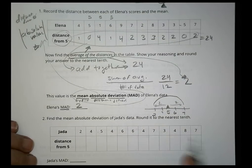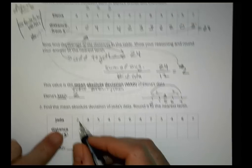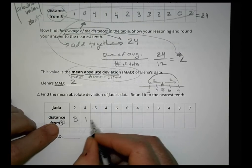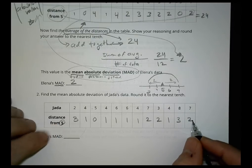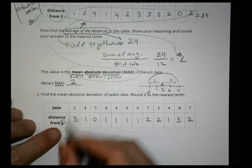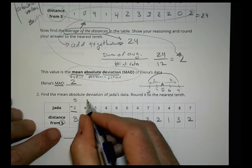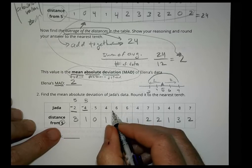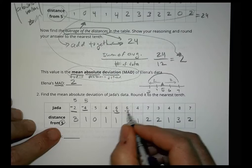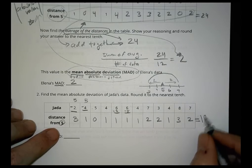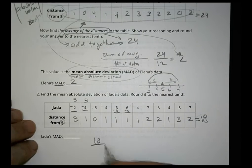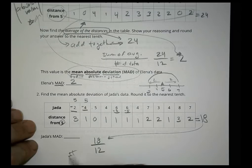Now let's find the mean absolute deviation for Jada. We find the distance from 5 for each of her values: 3, 1, 0, 1, 1, 1, 1, 2, 2, 1, 3, 2. For values less than 5 we do 5 minus the value; for values greater than 5, like 6, we do 6 minus 5. When you add those distances up, they equal 18. We take 18 and divide it by 12, and 18 divided by 12 is 1.5. So Jada's mean absolute deviation is 1.5.